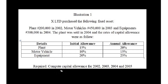The question says compute capital allowance for 2002, 2003, 2004, and 2005 — that is for four years. The first thing we are going to do is calculate all the values we need: initial allowance for plant, annual allowance for plant, then do the same for motor vehicle and equipment, before we go into the main solution. I have given you formulas on how to calculate initial allowance and annual allowance, so let's carry out these calculations so that we can insert our figures into the table.